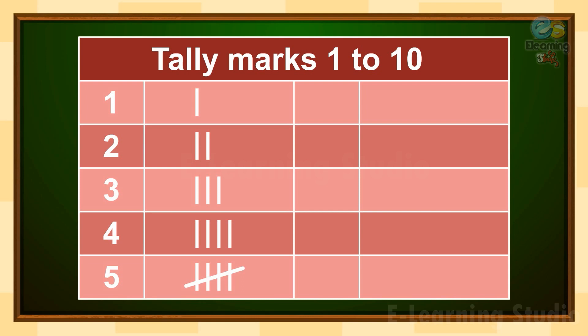Okay children, now for number 6. We draw 4 vertical lines: 1, 2, 3, 4, and then 1 slanting line to make it 5, and then one more vertical line for 6. Similarly, to draw 7, draw a group of 5 tally marks and then 2 more vertical lines for a total of 7.